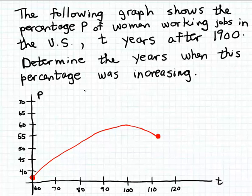Okay, in this example we're given a function represented by a graph, and this function relates the percentage p - that's what we're calling the percentage, we're using the variable p to represent that percentage of women in the U.S. who work jobs outside of the home. And so that percentage is related to the number of years, number of elapsed years after 1900, so we're calling that amount t.